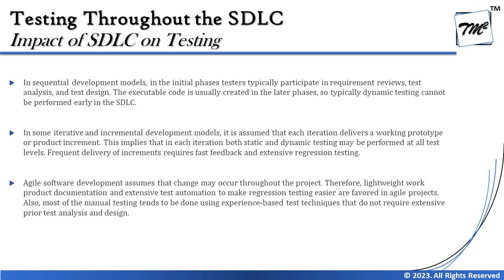In sequential development models like waterfall and V-model, testers typically participate in requirement reviews, test analysis, and test design in the initial phases. However, executable code is usually created in later phases, meaning dynamic testing cannot be performed early in the life cycle. Testers must wait a long time before they have something to execute, unlike agile where testing begins quickly.